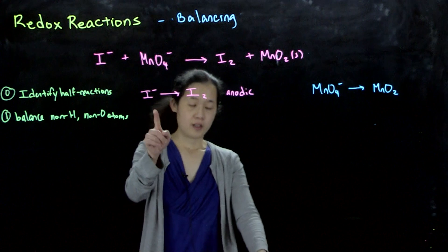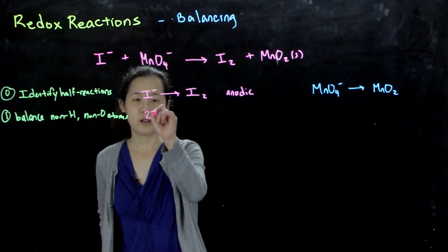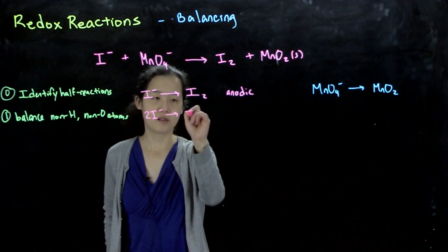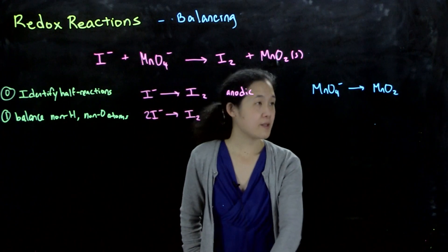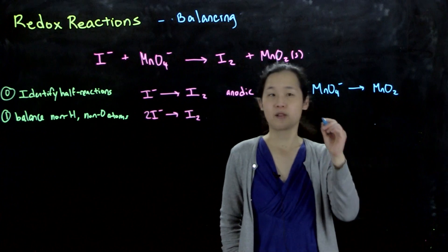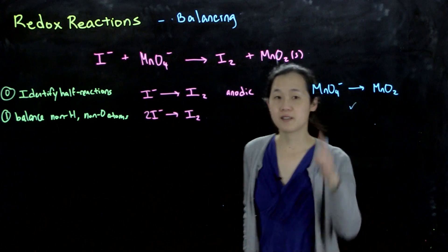For this oxidation reaction, we just need 2I⁻ goes to I₂. Two and two, A-okay. For this one, our manganese is already balanced, so we're already good. I'll put a check mark here. It stays the same.